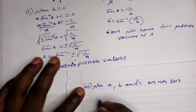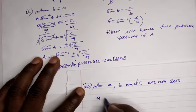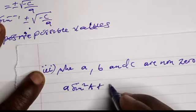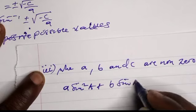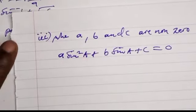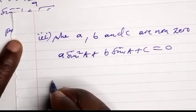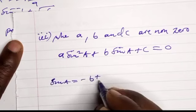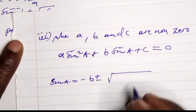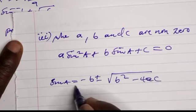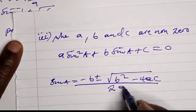When a, b, and c are all non-zero, the full quadratic equation a·sin²(A) + b·sin(A) + c = 0 applies. We use the quadratic formula: sin(A) = [−b ± √(b² − 4ac)] / 2a.